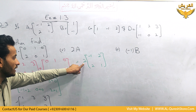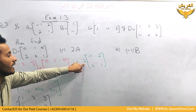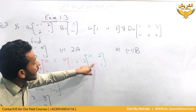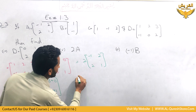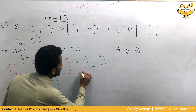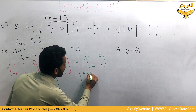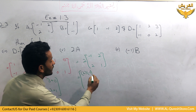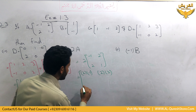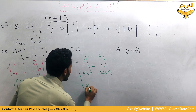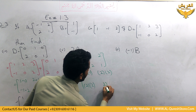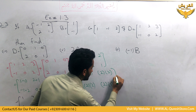In scalar multiplication, we multiply this scalar number by all the elements of the matrix. So: 2 multiplied with minus 1, then 2 multiplied with 2, 2 multiplied with 2, and 2 multiplied with 1.